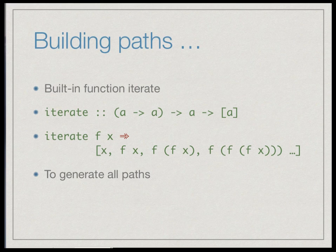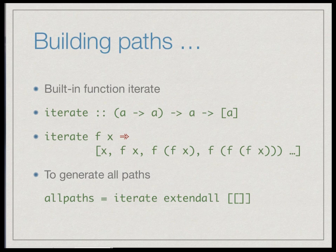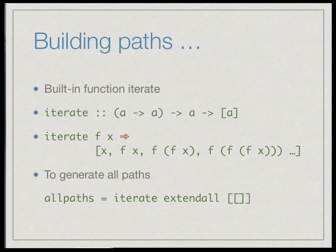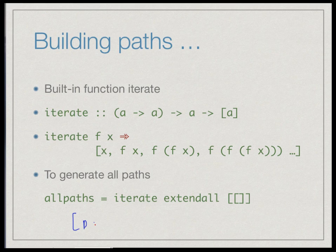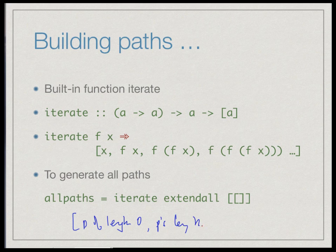To generate all paths, it suffices to iterate `extend_all` starting with the empty path. Applying `extend_all` once to the empty path gives paths of length 1; applying it again gives paths of length 2; and so on. Using `iterate`, we get a list: [paths of length 0, paths of length 1, paths of length 2, ...] and so on indefinitely.